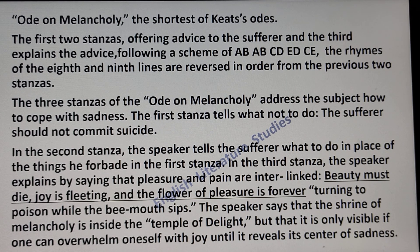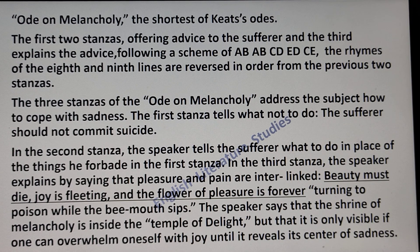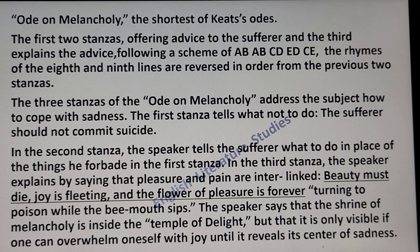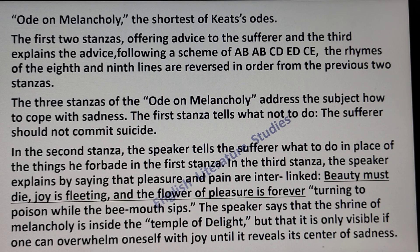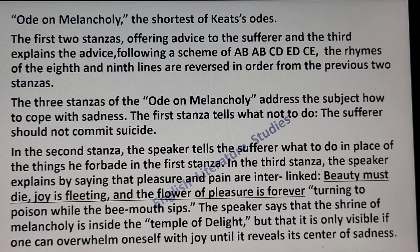The rhymes of the eighth and ninth lines are reversed in order from the previous two stanzas. The three stanzas of the Ode on Melancholy address how to cope with sadness. The first stanza tells what not to do — the sufferer should not commit suicide. In the second stanza the speaker tells the sufferer what to do instead. In the third stanza, the speaker explains that pleasure and pain are interlinked, beauty must die, joy is fleeting, and the flower of pleasure is forever turning to poison. The shrine of melancholy is inside the temple of delight, visible only if one can overwhelm oneself with joy until it reveals its center of sadness.